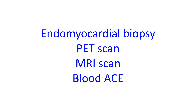Elevated blood level of angiotensin-converting enzyme (ACE) is an indicator of sarcoidosis in general. ACE is an enzyme produced mainly in the tiny blood vessels of the lungs.